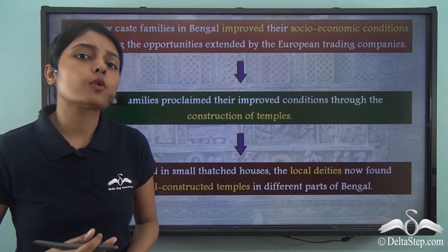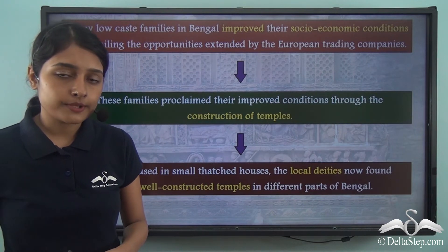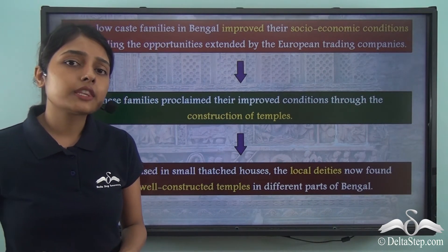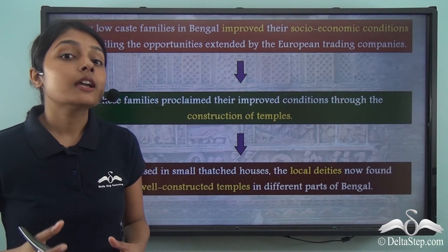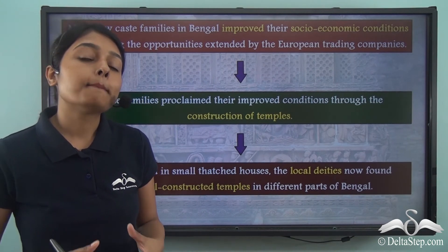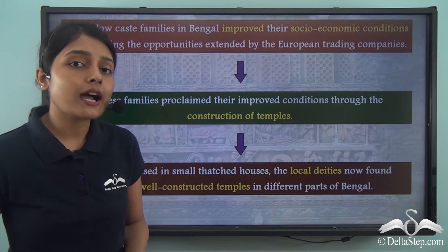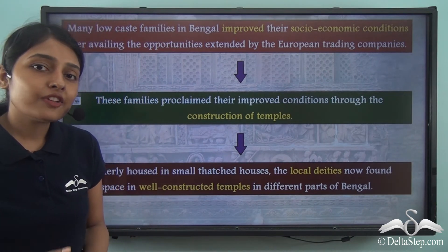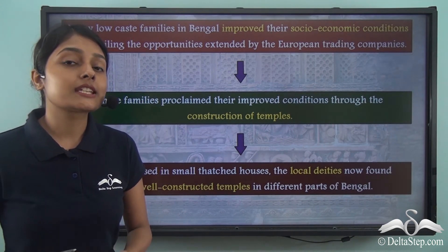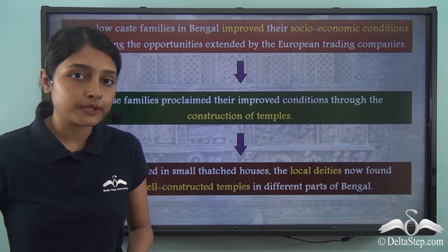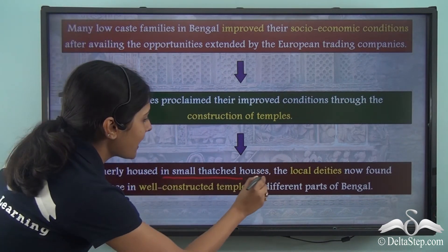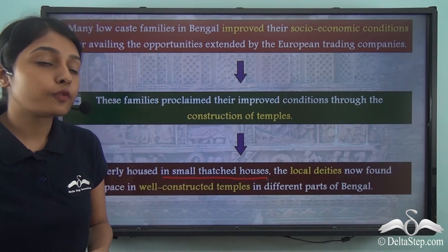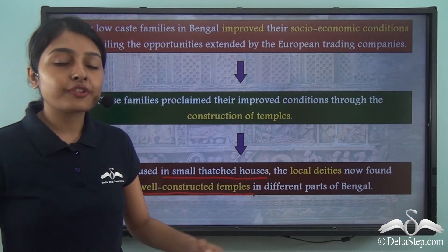Now religion in the subcontinent has always been dominated by upper caste members. Now this was the first time the lower caste members were able to make their own temples. Earlier on they were not even allowed to enter the temples, let alone construct one. But now they were able to make their own temples. Now most of these lower caste families had their own local deities whom they worshipped. Earlier on when these local deities did not find any space in the temple premises dominated by the upper caste members, these local deities were housed in small thatched houses. But now these local deities found space and a place of worship in well-constructed temples in different parts of Bengal.